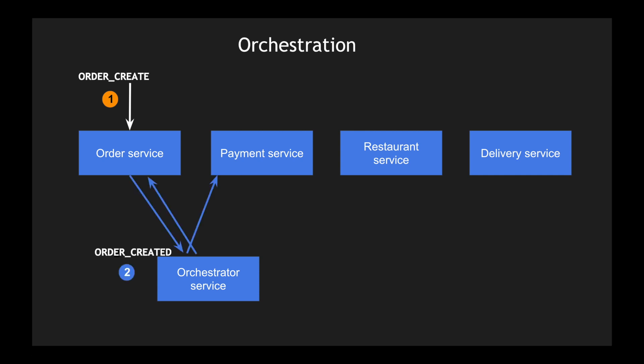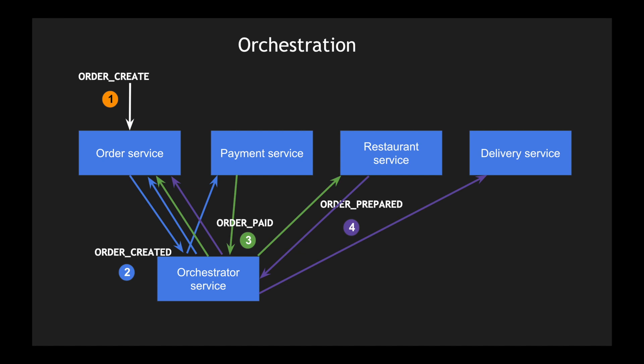The order service pushes a message to the orchestrator service. Once the orchestrator receives confirmation that the order has been created, it sends a message back to the order service to update status, and also triggers the payment service. The payment service pays the order and responds with 'order paid' to the orchestrator. The orchestrator then updates the order service and calls the restaurant service to prepare the food. The restaurant service calls back with 'order prepared,' which triggers updates to the order service and the delivery service.